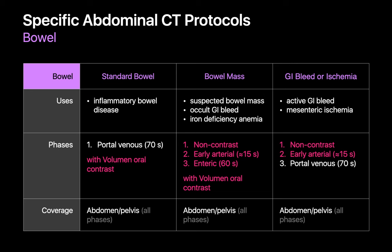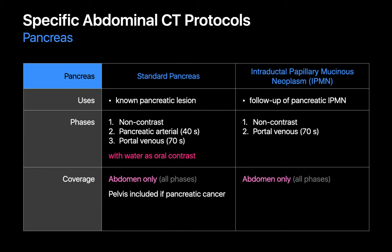The GI bleed or ischemia protocol may be used in the setting of an active GI bleed or mesenteric ischemia, and consists of a non-contrast scan and two enhanced scans during the early arterial phase and portal venous phase. Two specific abdominal CT protocols that target the pancreas are the standard pancreas protocol and the IPMN protocol. The standard pancreas protocol, performed for a known pancreatic lesion, consists of three scans: a non-contrast scan and two enhanced scans during the pancreatic arterial phase and portal venous phase. Water will often be used as a negative oral contrast agent to help distinguish between the duodenum and pancreas. The IPMN protocol, usually done for pancreatic IPMN follow-up, consists of a non-contrast scan and an enhanced scan during the portal venous phase.